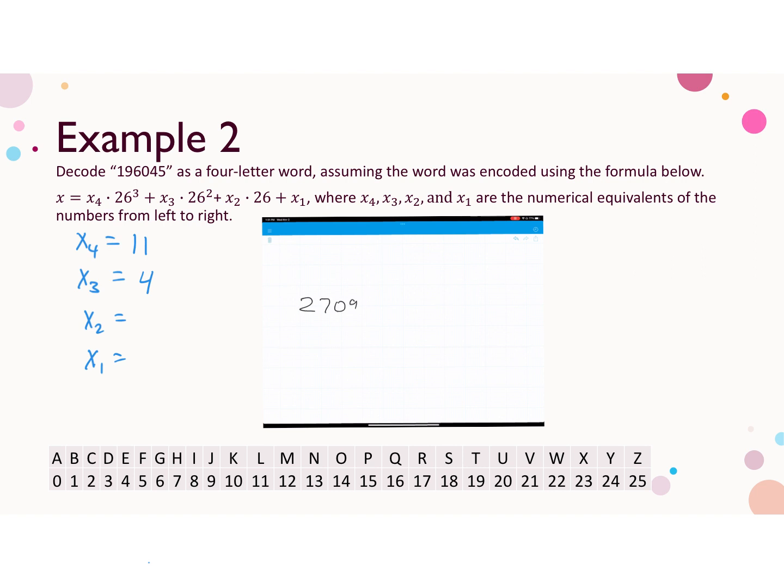Again, we'll figure out the remainder, 2709 minus 4 times 26 cubed, gives us 5. Next, we would divide that by 26 squared, but obviously 26 squared does not go into 5. So X2 is 0, and the remainder is 5.